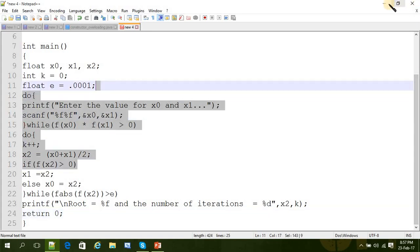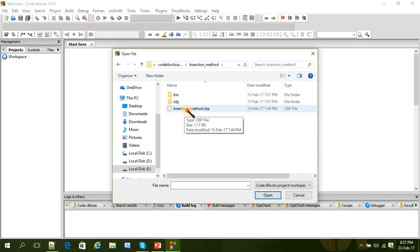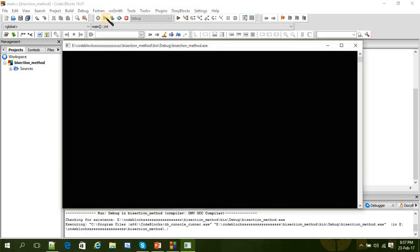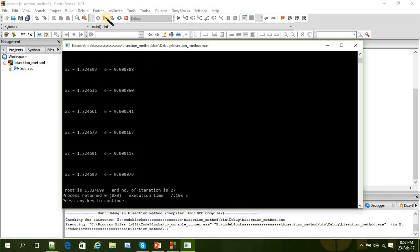And if we run the program, here is the bisection method, the same program. And if we just compile it and run it. And we just have to put the range. 1, 2, 3.